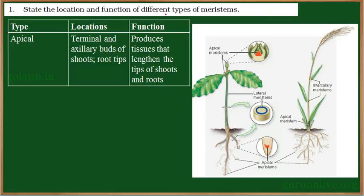Plant tissues are classified into two types: meristematic tissue and permanent tissue. Meristems are tissues which can undergo constant cell division and give rise to all types of permanent tissue. Based on their location, meristems are further classified.